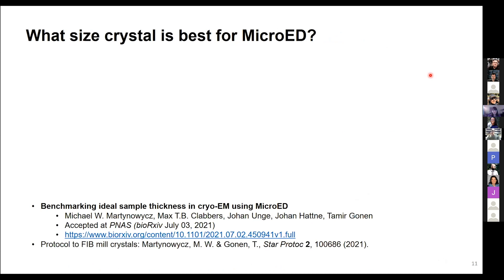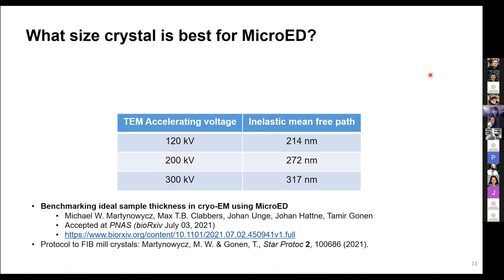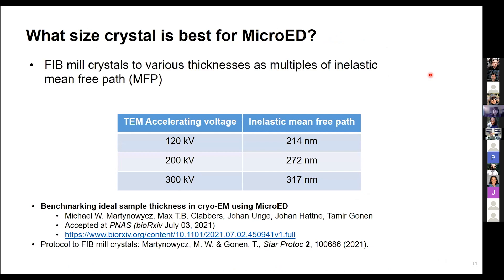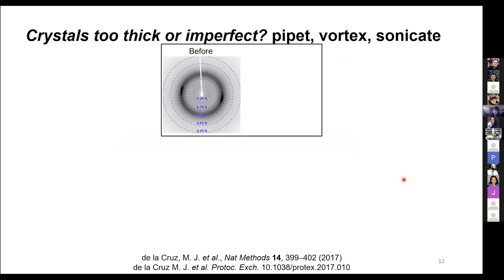You're probably wondering what's the best crystal size for microED. The lab did experiments to FIB-mill crystals of proteinase K to various thicknesses, corresponding to multiples of the inelastic mean-free path of electrons at a given accelerating voltage. They used thicknesses from half of the mean-free path up to five times. They found that as long as your sample is thinner than two times the mean-free path — ideally around one times the mean-free path — you can solve structures no problem.